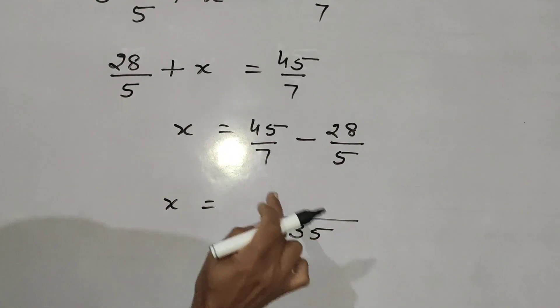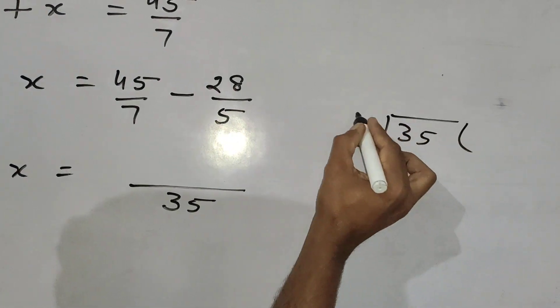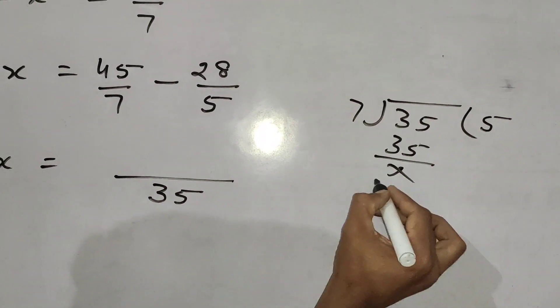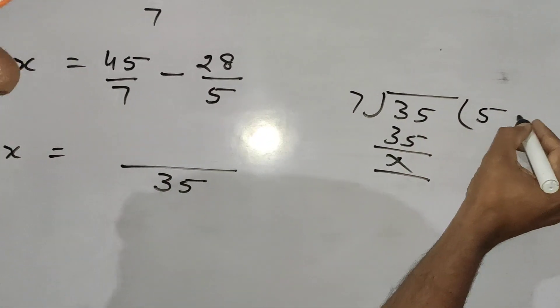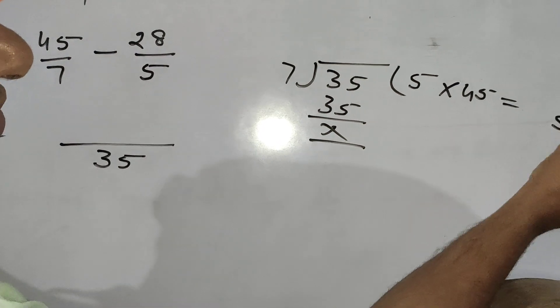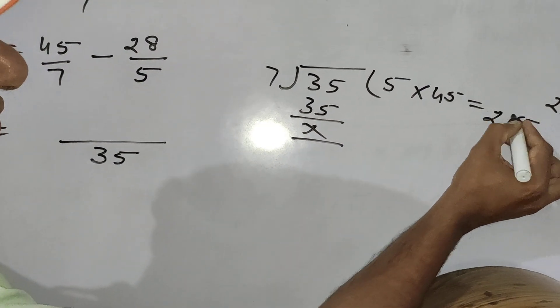Then 7, 35 divided by 7. 7, 35 and then X 5, X 45. 5, 5 is equal to 25. 5, 4 is equal to 20 plus 2, 22.